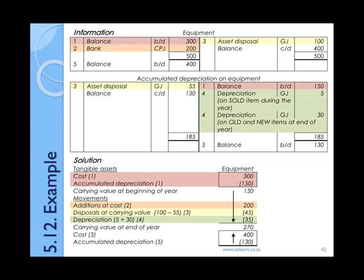The last part of the movements is the depreciation. Notice, as I mentioned before, you are going to include both the depreciation on the sold item calculated during the year as well as the old and new items that were calculated at the end of the year. You will usually see both of these entries in your accumulated depreciation account, so all you need to do is add them together. 5 plus 30 gives you total depreciation for the period of 35 Rand. Again, it is reducing the value of the assets, and so you need to show it in brackets. Just like with the accumulated depreciation at the beginning, if you forget to show your brackets, you will lose marks.